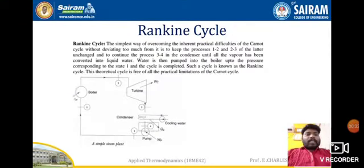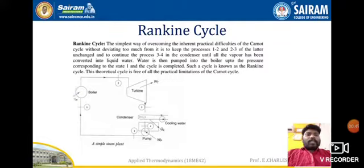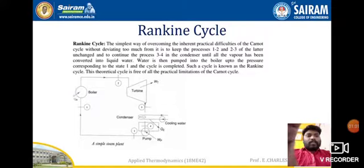The first topic in vapor power cycles is the Rankine cycle. In this cycle, steam is used in the steam plant or power plant. The components used in the Rankine cycle are the turbine, boiler, condenser, and a small pump.